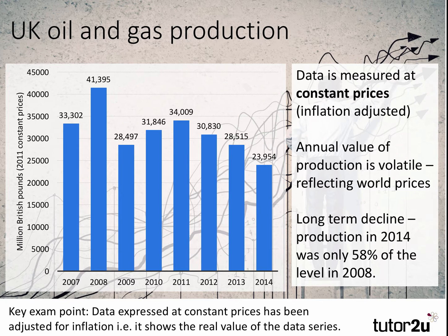The annual value of production appears to be quite volatile from year to year. For example, the output was highest in 2008, over $41 billion of output, but by 2014, output was much lower. That allows you to pick out the long-term decline over the period. Indeed, production in 2014, if you do the percentage calculation, was only 58% of the level in 2008.